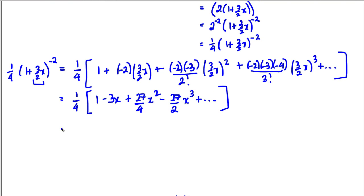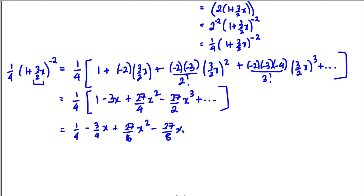Now multiply everything through by that quarter: we get 1/4 − (3/4)x + (27/16)x² − (27/8)x³ plus dot dot dot. And we're done with the algebra.